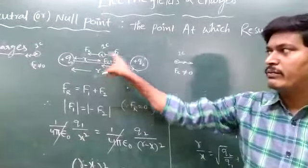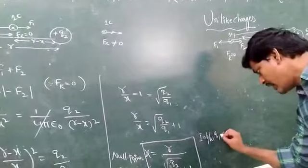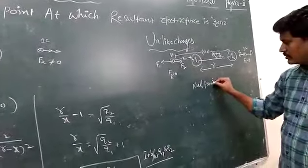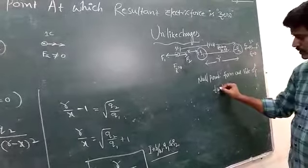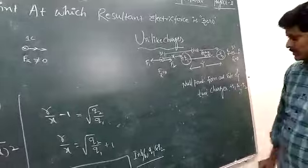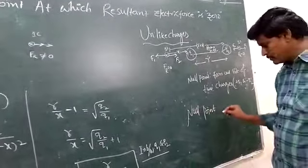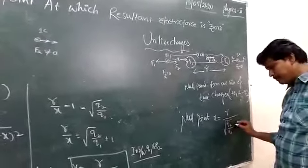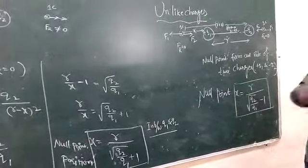For like charges, the null point forms in between Q1 and Q2. For unlike charges — plus Q1 and minus Q2 — the null point forms outside of the two charges. The position of the null point is X equals R divided by (root over (Q2/Q1) minus 1).